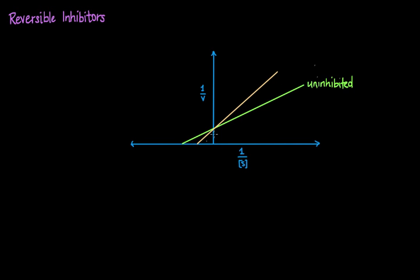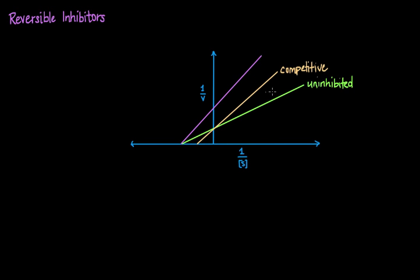This is an example of what a competitive inhibitor would look like on the plot. Now let's say we add yet another type of inhibitor and it changes the graph to look like this. Just by looking at the graph, we can tell that this is a non-competitive inhibitor.